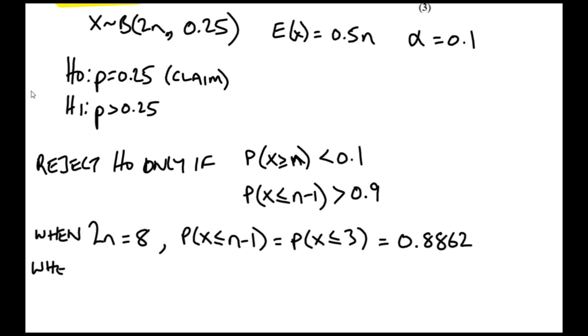What about when 2n equals 10? The probability that x is less than or equal to n minus 1 is going to equal the probability that x is less than or equal to 4. Half of 10 is 5 and 1 less than that would get me a 4. What does that equal? That equals 0.9219. This is bigger than 0.9. So it's hit that condition that I set. I would only reject H0 if this happened.